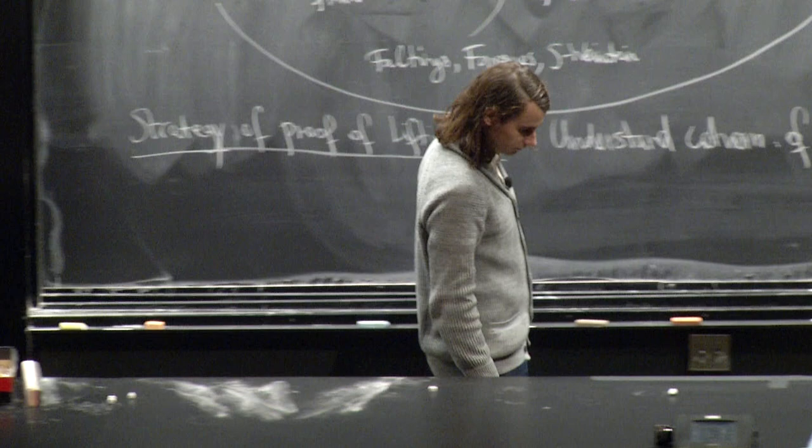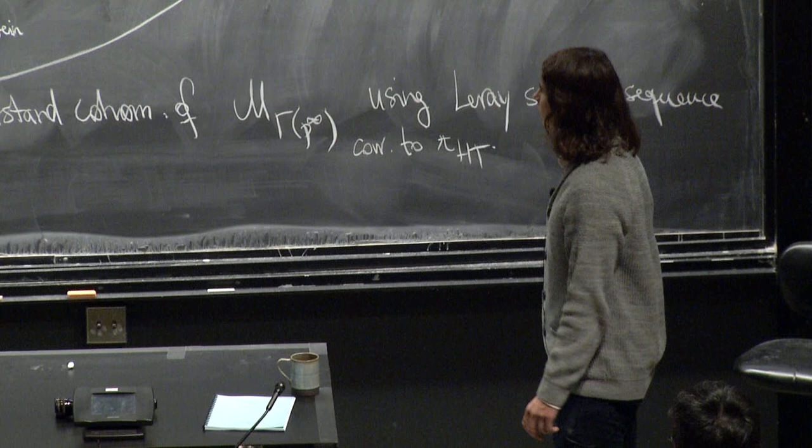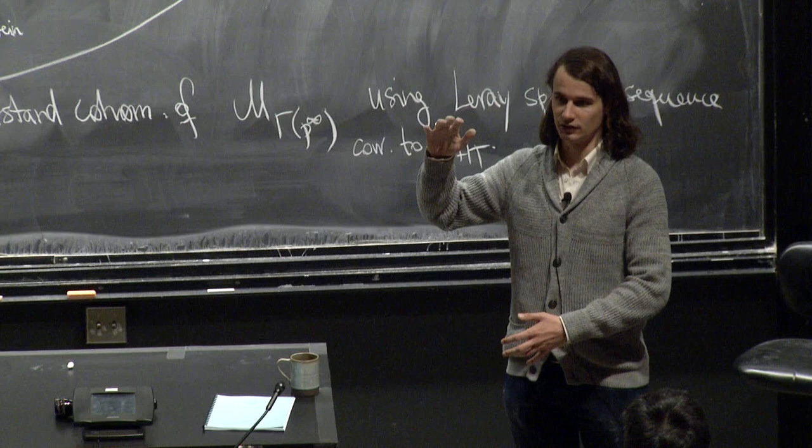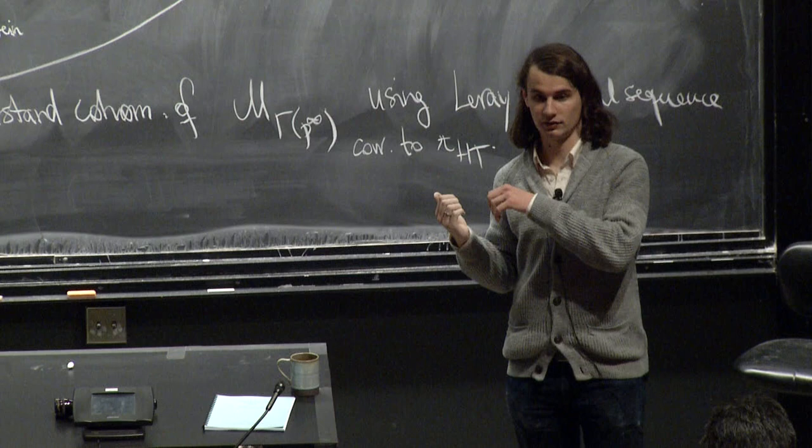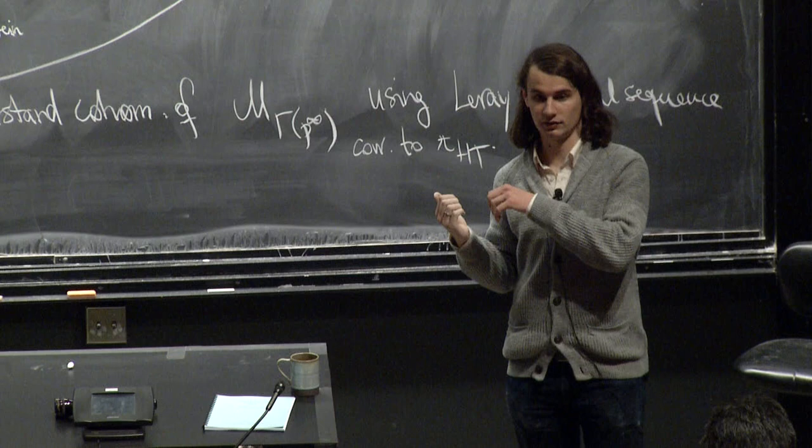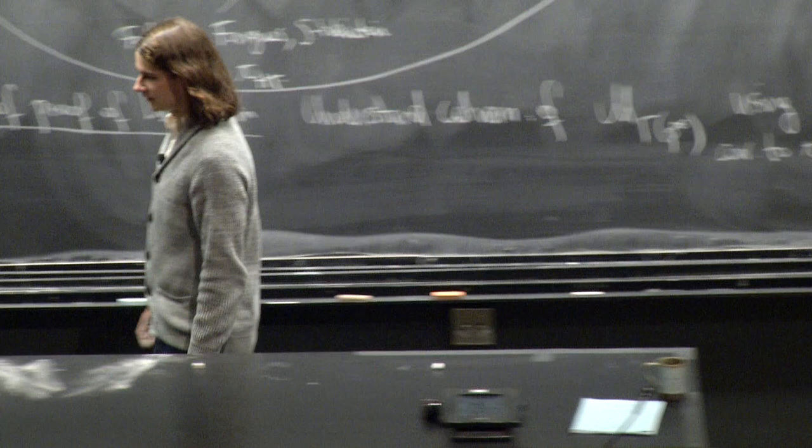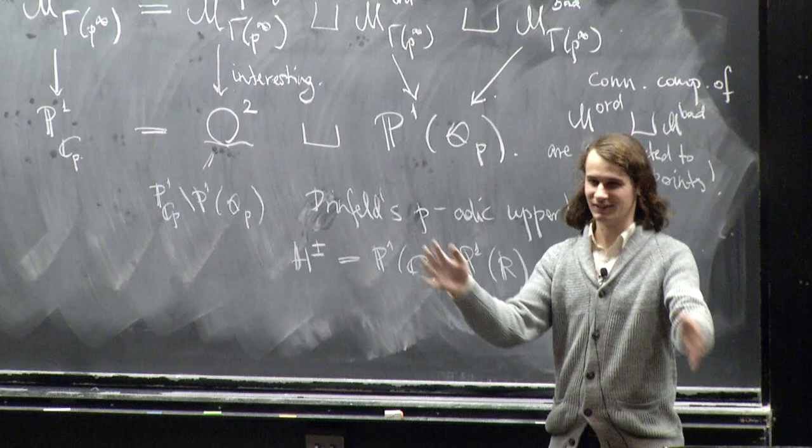Well, so what happens over the complex numbers is that you always have this Borel embedding of this bounded symmetric domain into its compact dual. And so that's some flag variety, and you use essentially the same flag variety in the p-adic case. That's the P1. Actually, it's a dual flag variety in some sense because of this. The pieces appeared the other way around.